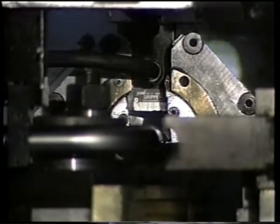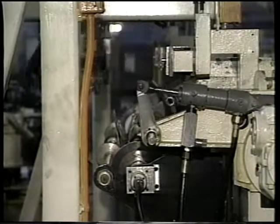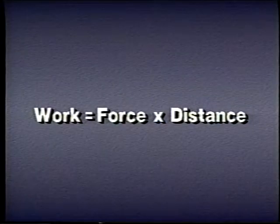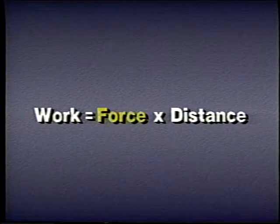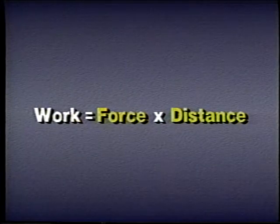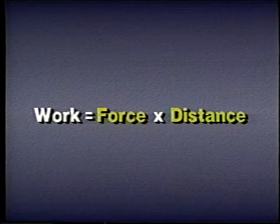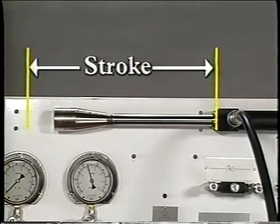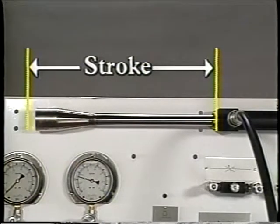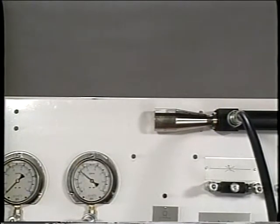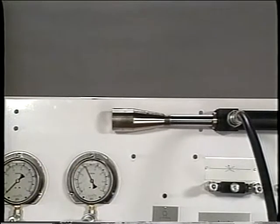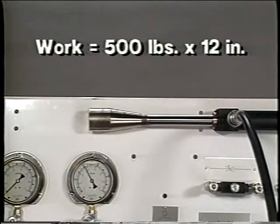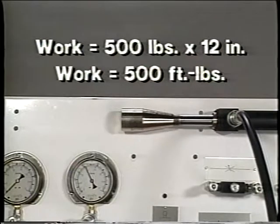Now that we know how to determine the speed of actuators and the force or torque they create, we can calculate how much power they produce. Work is done when force is applied and moves a load a distance. In the case of a cylinder, the distance the load is moved is measured by the stroke of the piston, often in inches. Calculating the work a cylinder performs is simply a matter of multiplying force times distance — for example, a 12-inch stroke with 500 pounds of force yields 500 foot-pounds of work.